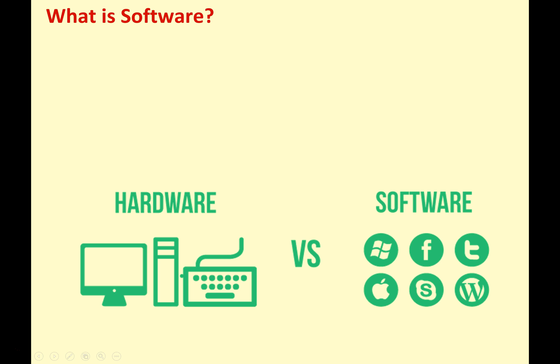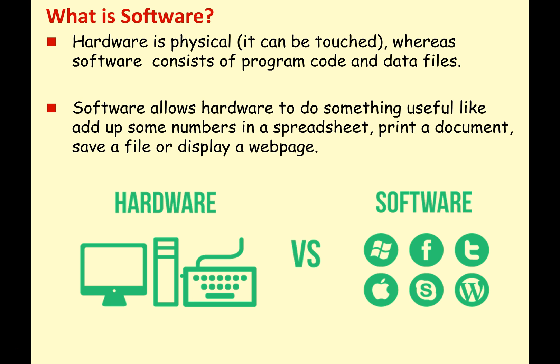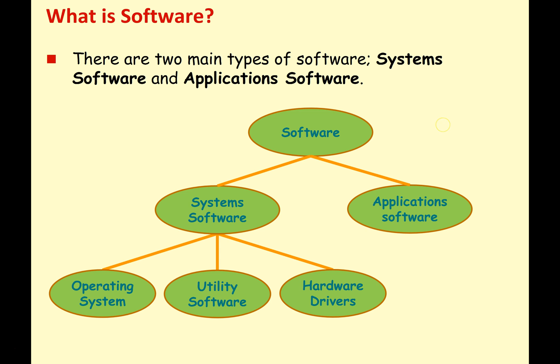What is software? Well, to understand software, we have to understand hardware. Hardware, as the name suggests, is the physical components — it's the stuff that we can touch: the CPU, the memory, the keyboards, the mouse, etc. Whereas software consists of program code and data files. Software allows hardware to do something useful, like add up some numbers in a spreadsheet, print a document, save a file, or display a web page. There are two main types of software: system software and application software.